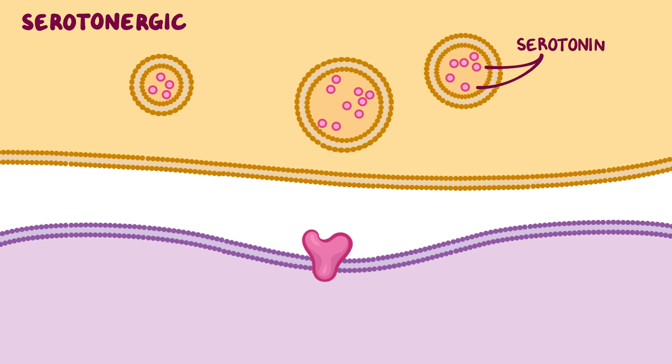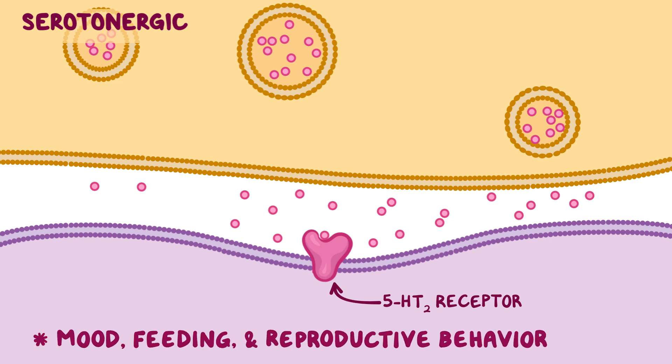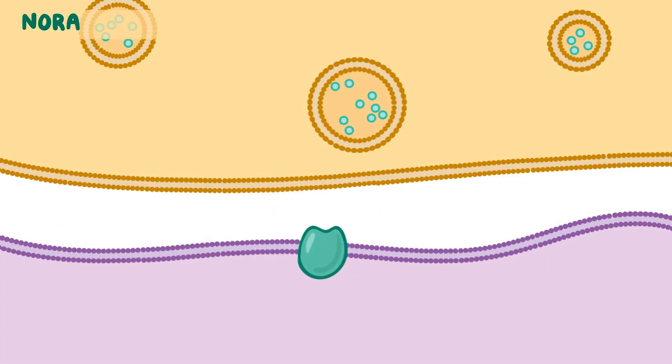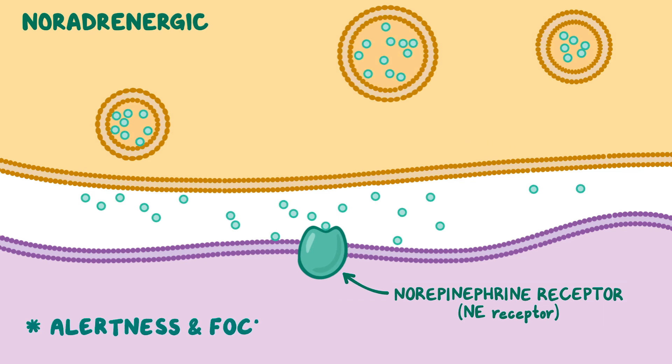Serotonergic neurons release serotonin, which then binds to 5-HT2 receptors, thereby increasing neural stimulation and regulating mood, feeding, and reproductive behavior. On the other hand, noradrenergic neurons release norepinephrine, which hooks up to the norepinephrine receptors, boosting alertness and focus.